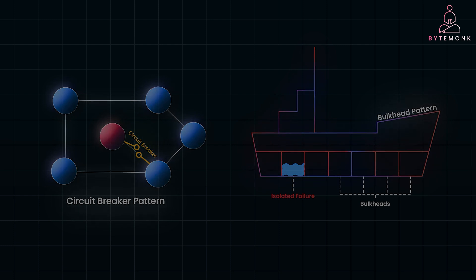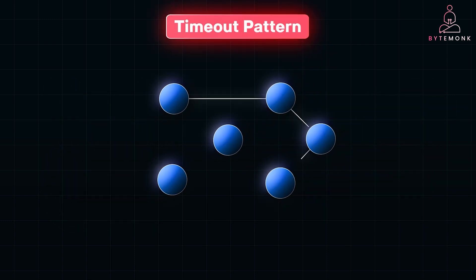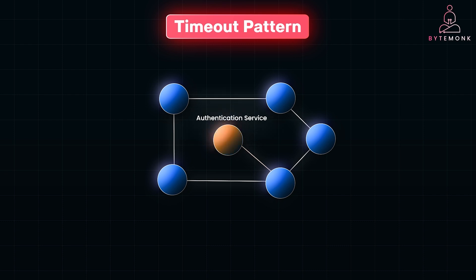Let's talk about the timeout pattern. Without proper timeouts, your system could end up waiting indefinitely for a response that's never coming. By setting a timeout, you ensure that if a service doesn't respond within a certain time, the request is abandoned and your system remains responsive. For example, if your authentication service is taking too long to respond, the system will cancel the request after a few seconds and either retry or fall back to another solution, preventing users from waiting forever and keeping your system snappy.